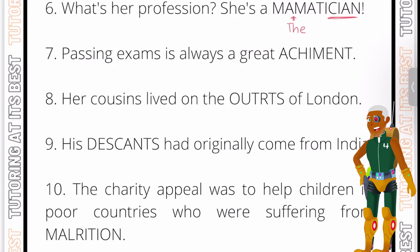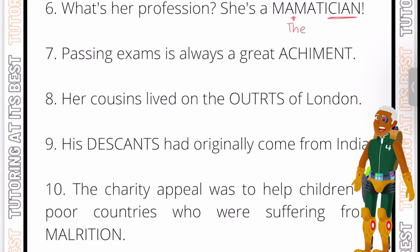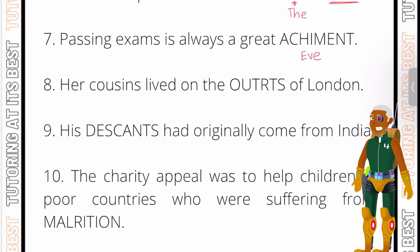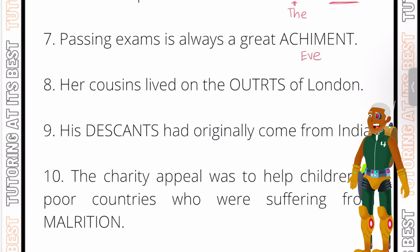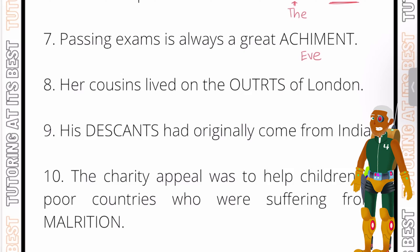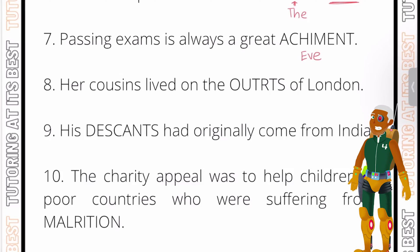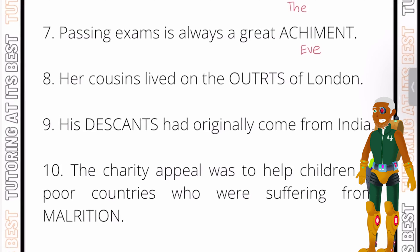Question seven: 'Passing exams is always a great ACHMENTS.' As you read the sentence, the correct answer is E-V-E. By putting 'eve' back into the capitalized word we make the word 'achievement'. The practice you get through these videos will help you towards achievement — take the word, apply it to a sentence, and it'll help you with both spellings and meanings.